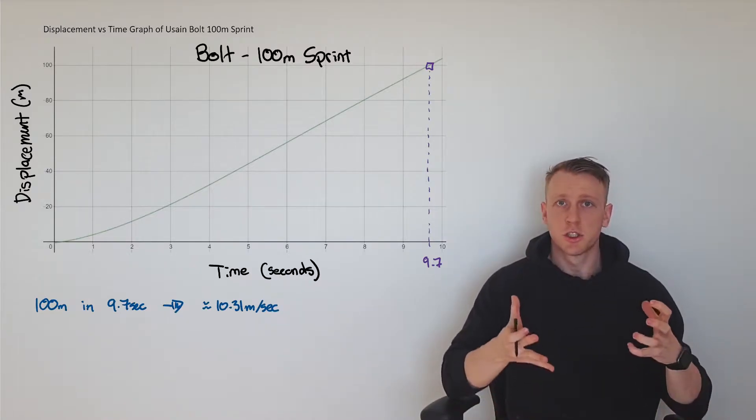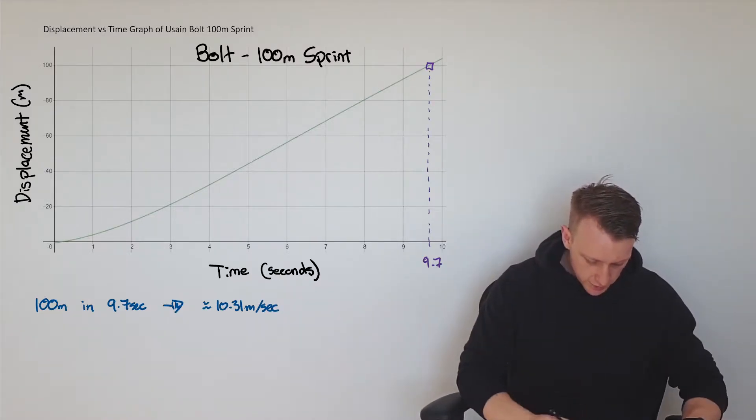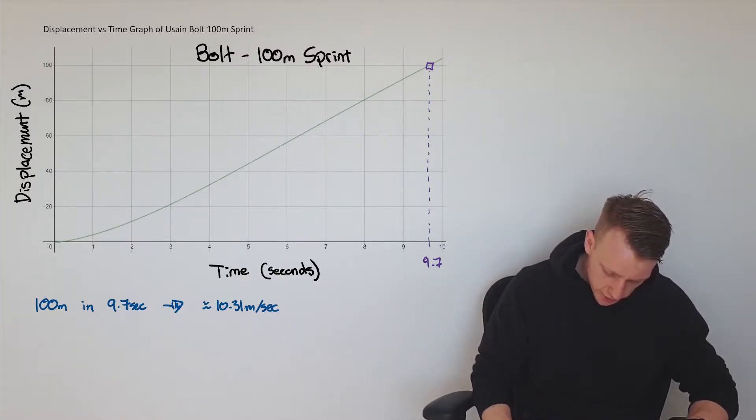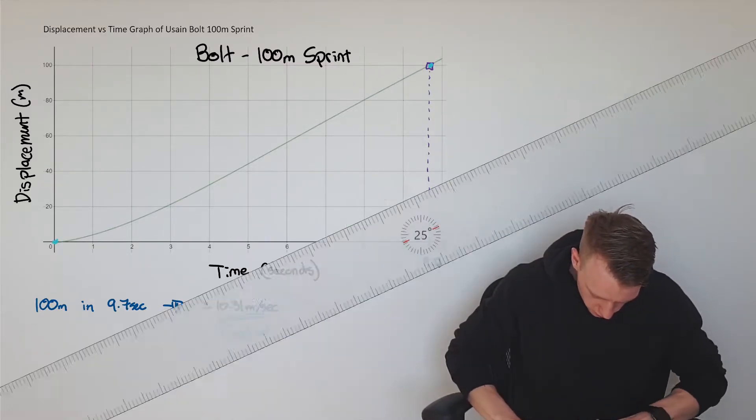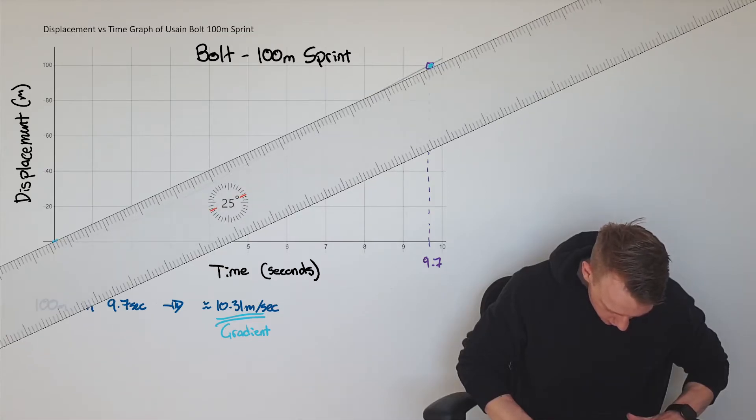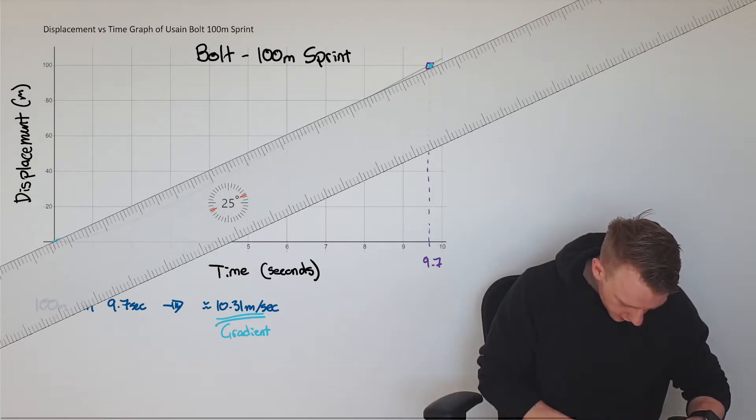Just to show you, this is actually the gradient. This is the gradient from this point here all the way up to this point here. The gradient of that one is 10.31. We can see it's not exactly precise.